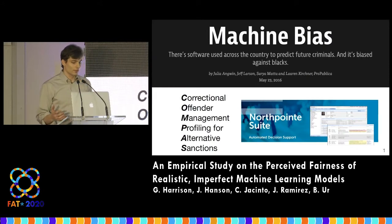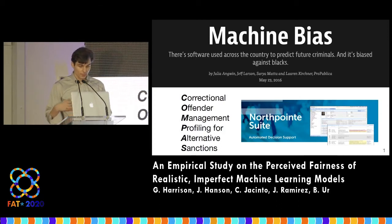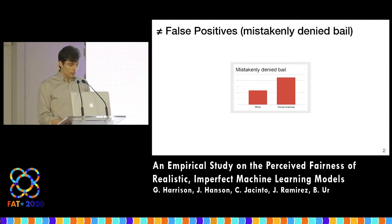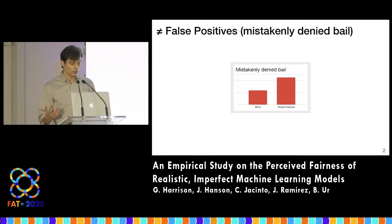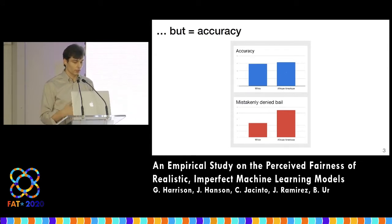I'm going to start by talking about COMPAS — the tool used to help courts make parole determinations by predicting the risk a parole candidate would re-offend. In 2016, ProPublica analyzed the risk scores from COMPAS and found that it was biased against African-American parole candidates. Specifically, they found that African-American parole candidates were mistakenly classified as higher risk more often than white parole candidates, and being classified as higher risk meant potentially being denied bail. The makers of COMPAS argued that their tool was not biased because it had roughly the same error rate between white and African-American parole candidates.